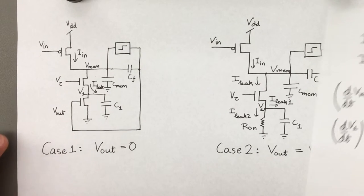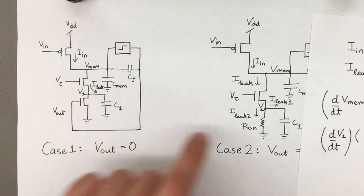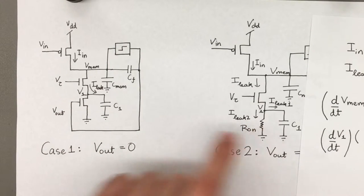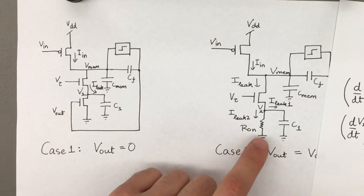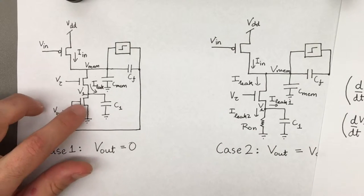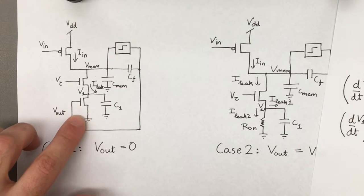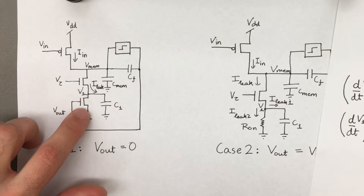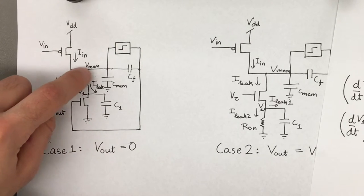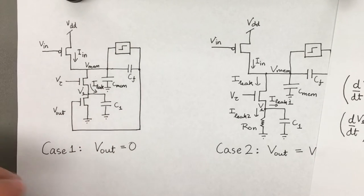What's different really is what goes on at this third MOSFET here. They are the same in both, but the second is drawn as a resistor because this is effectively on and acts as a resistor when current flows through it. Here, the MOSFET is off, so there is no current flow. All the leakage current is going through this capacitor until it charges up to Vmem and no current flows.